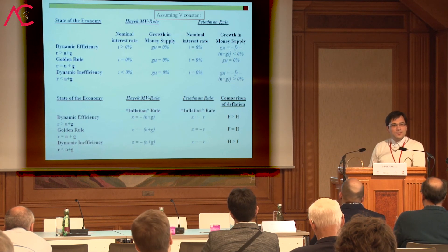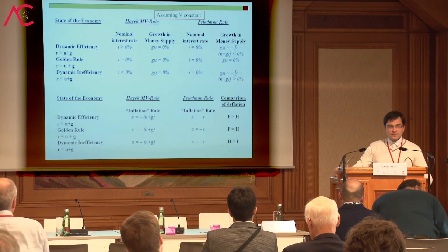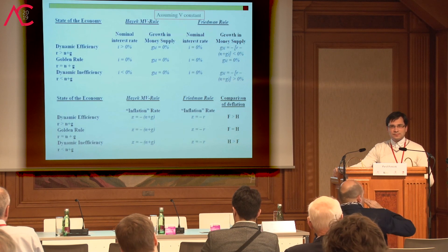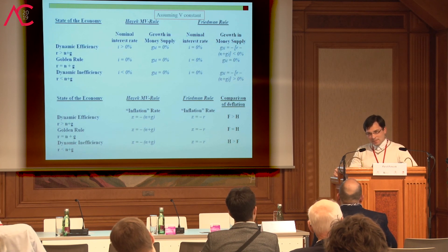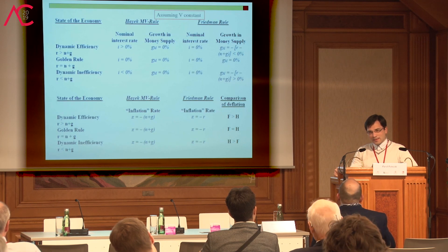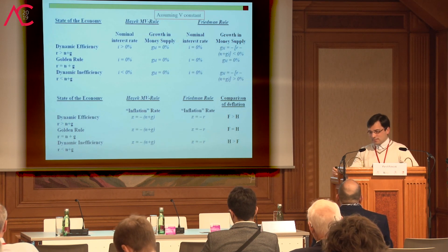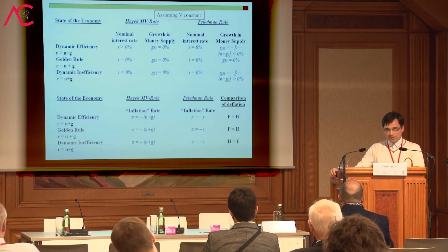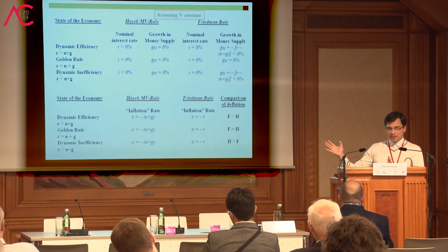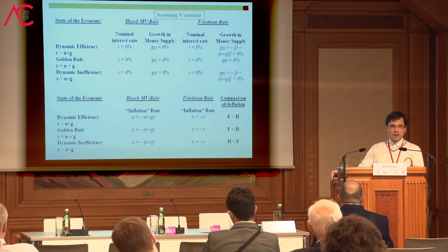Thank you very much for your attention. [Question from audience]: What do you think Hayek would recommend given the current state of affairs regarding the European Central Bank and its monetary policy? [Answer]: That's a very good question. If the ECB thought that nominal income would be falling over time, I think Hayek would recommend a drastic expansion in the money supply. If the velocity of circulation is strictly decreasing, it might be decreasing — the Hayek recommendation would be: do not allow the MV term to decline.